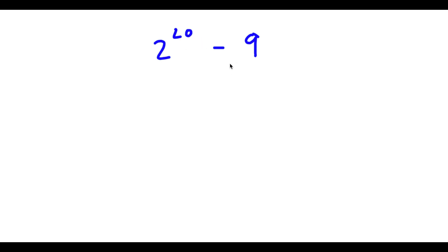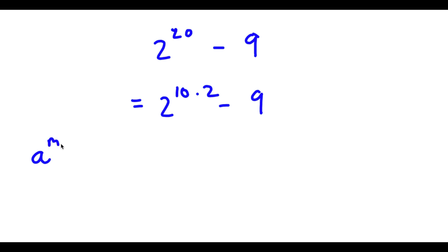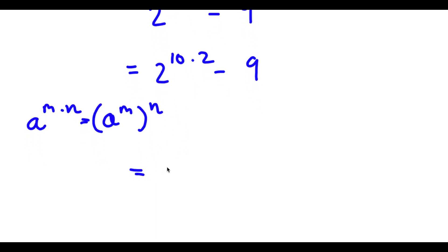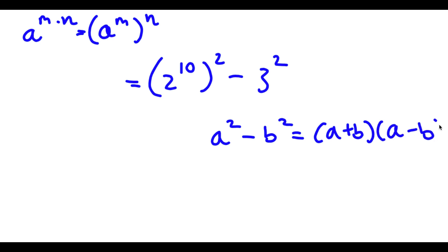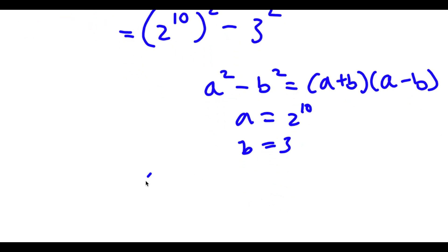Alright, so I have 2 to the power of 20 minus 9. So 2 to the power of 20 is the same thing as 2 to the power of 10 times 2, because 10 times 2 is 20. And if I have something in the form a to the power of m times n, this can be written as a to the power of m to the power of n. So 2 to the power of 10 times 2 can be written as 2 to the power of 10 to the power of 2. And 9 is the same thing as 3 squared. So if I have a squared minus b squared, this equals a plus b times a minus b. In this case a is 2 to the power of 10 and b is 3, so I have 2 to the power of 10 plus 3 times 2 to the power of 10 minus 3.